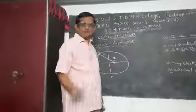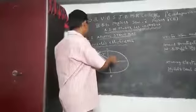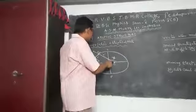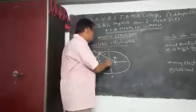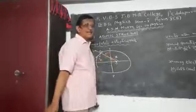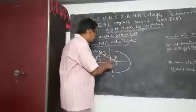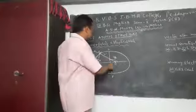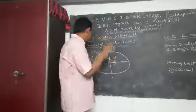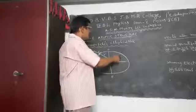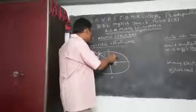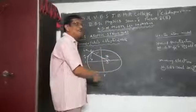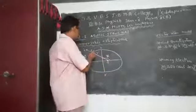A circular orbit has one degree of freedom. The elliptical orbit has got two degrees of freedom. One is radius vector, and the second one is azimuthal angle. Radius vector is nothing but the vector connecting the nucleus to the electron. The second one is azimuthal angle.